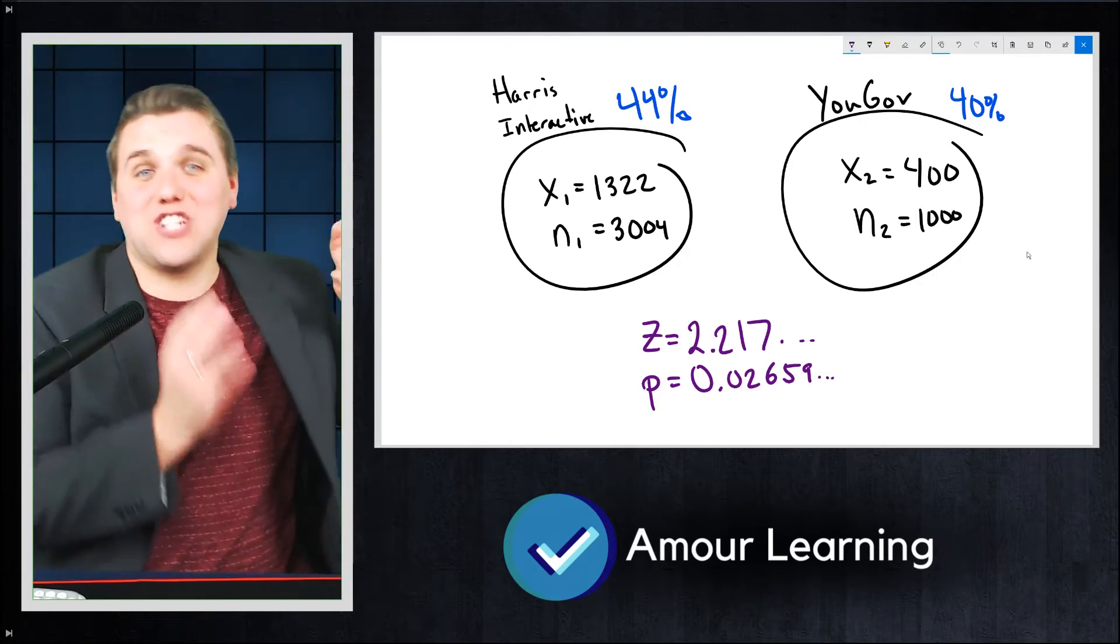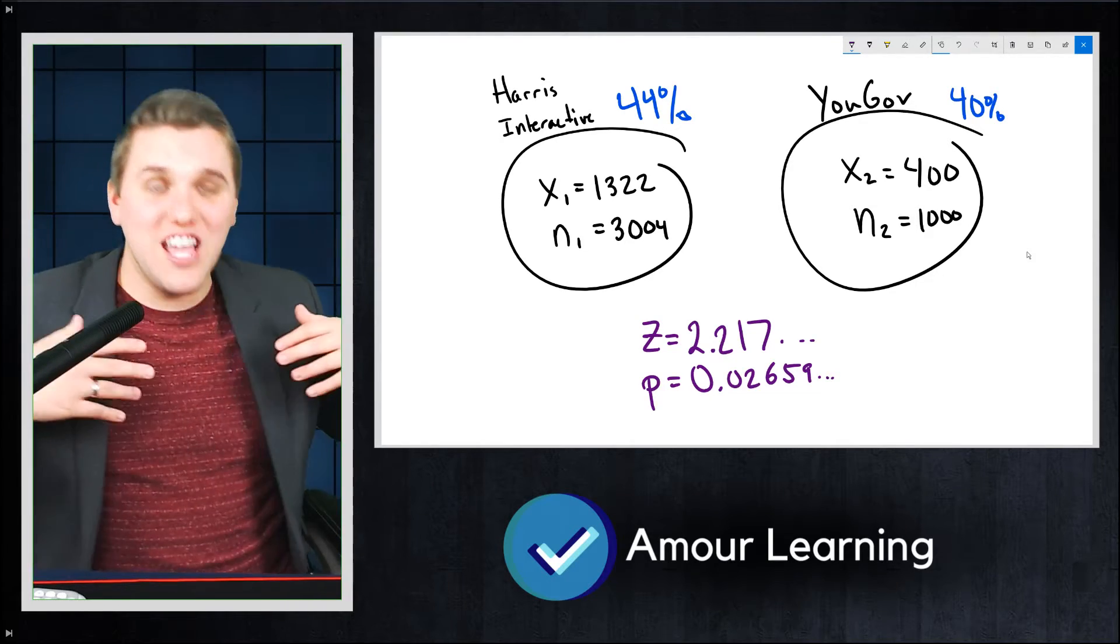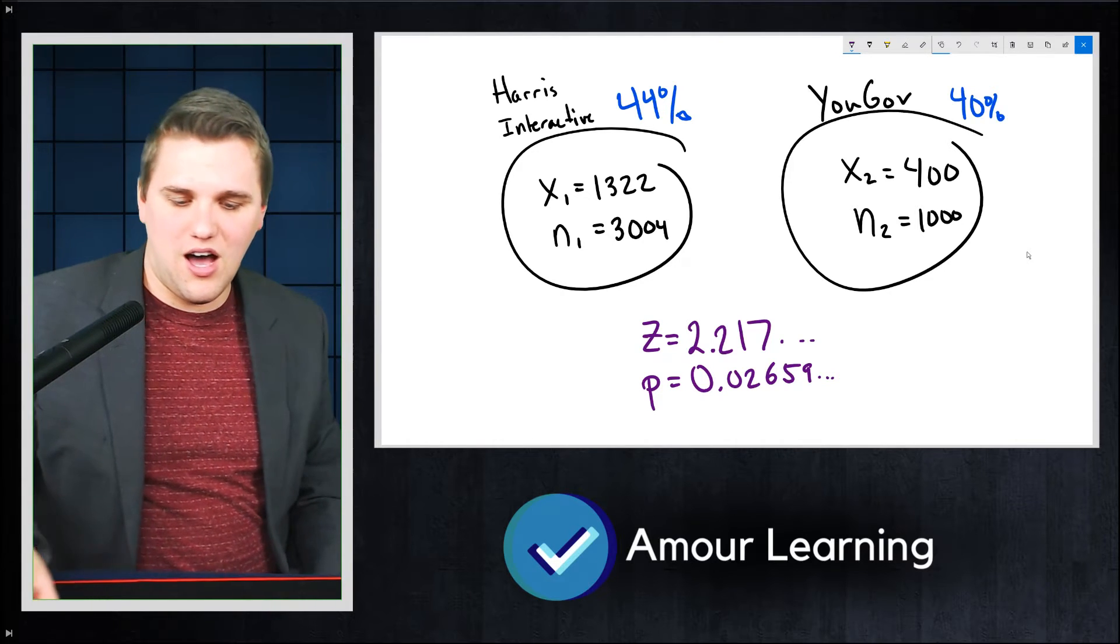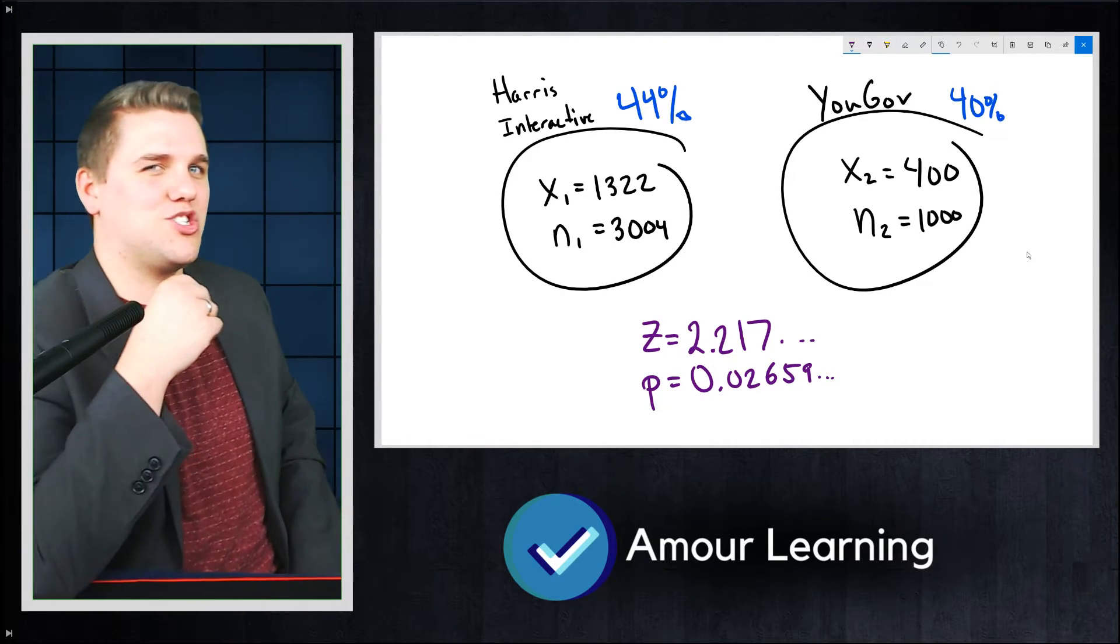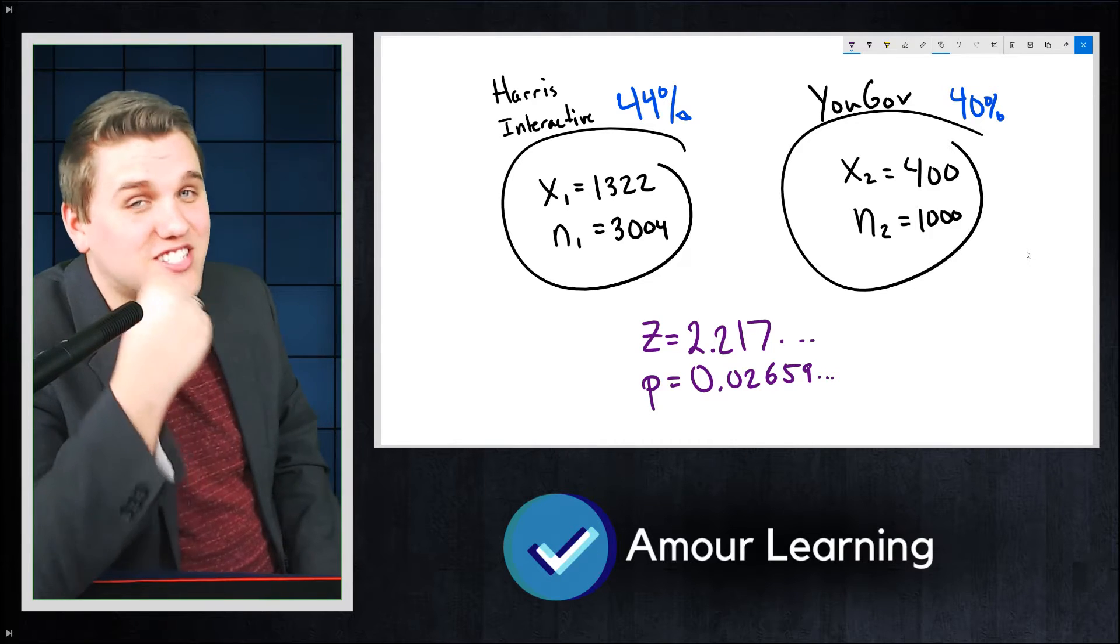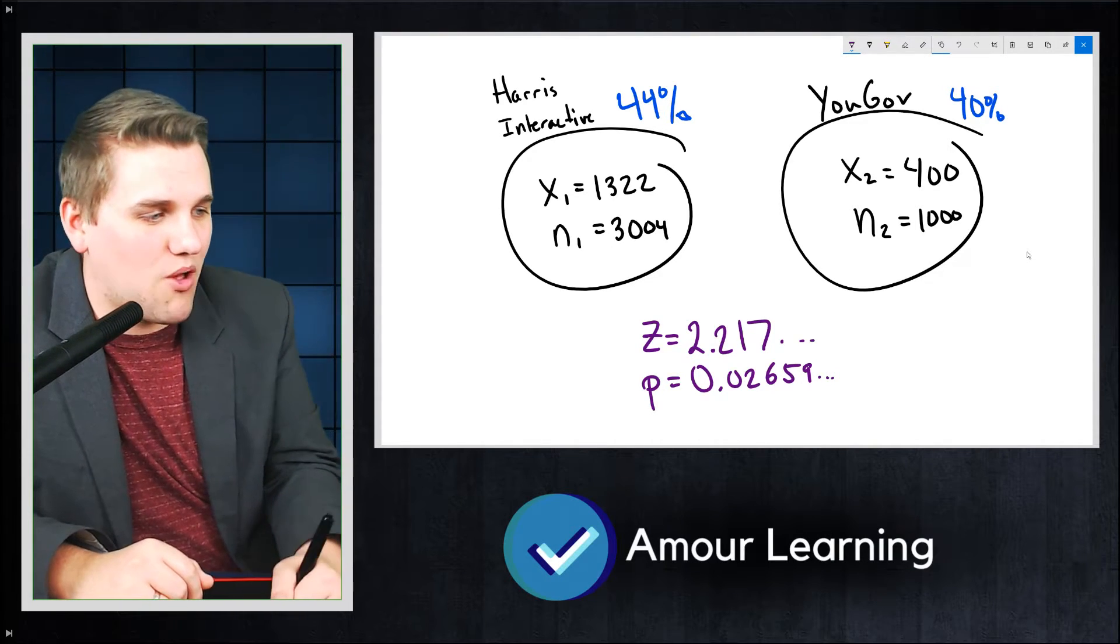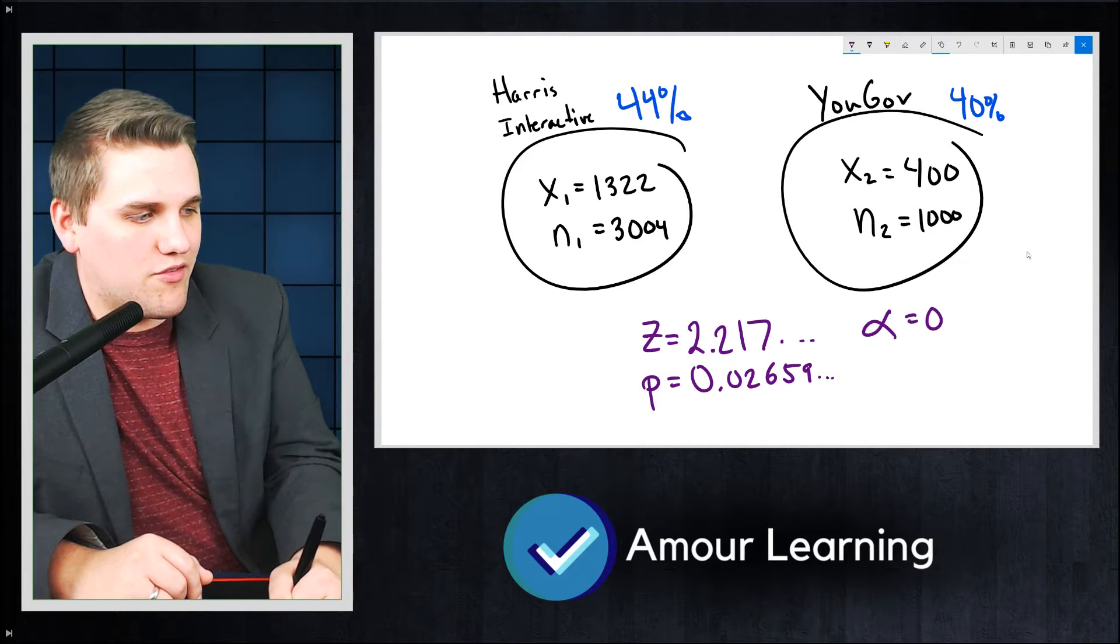Wow. So these are two actual polls that I just pulled up. They just happened as of yesterday, they came out. So let's talk about these two polls. They're statistically different from each other. This P value is less than a typical alpha value of 0.05. P is less than alpha,